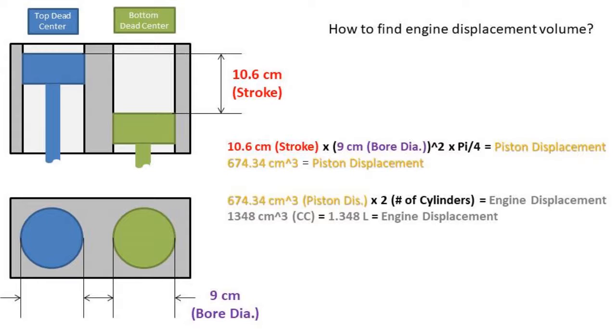Now to get the displacement volume of the engine, we need to take the number of cylinders, in this case 2, and multiply it by the volume displaced by one piston. So after plugging in our numbers, we get a total displacement of the engine of 1,348 cubic centimeters. This is 1.348 liters. Like previously stated, this is the common way engine volumes are marketed.